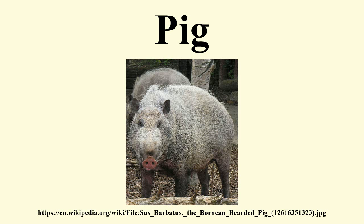Distribution and Evolution: With around 1 billion individuals alive at any time, the domesticated pig is one of the most numerous large mammals on the planet. The ancestor of the domesticated pig is the wild boar, which is one of the most numerous and widespread large mammals. Its many subspecies are native to all but the harshest climates of continental Eurasia and its islands and Africa, from Ireland and India to Japan and north to Siberia. Although it has been exterminated in some areas, its numbers are stable or even increasing rapidly in most of its native range.